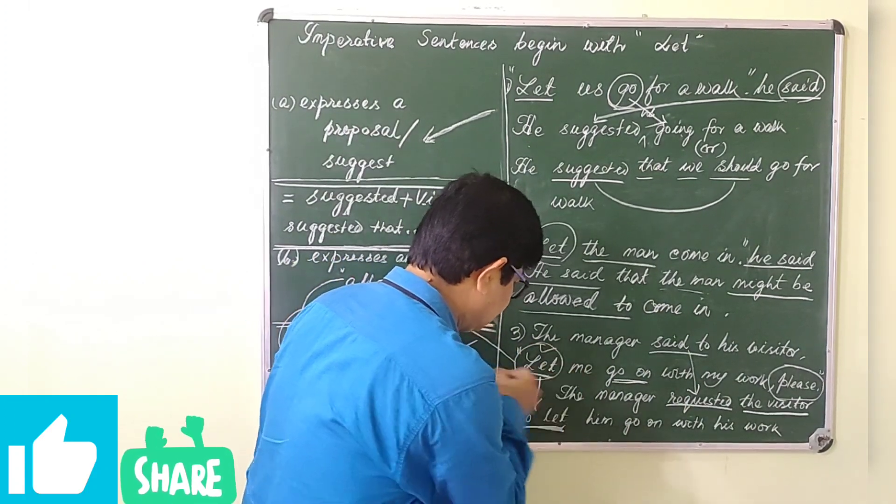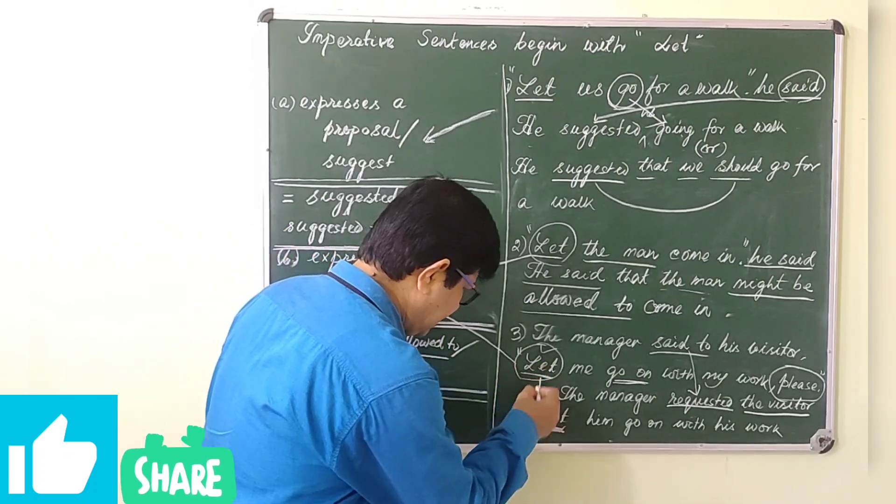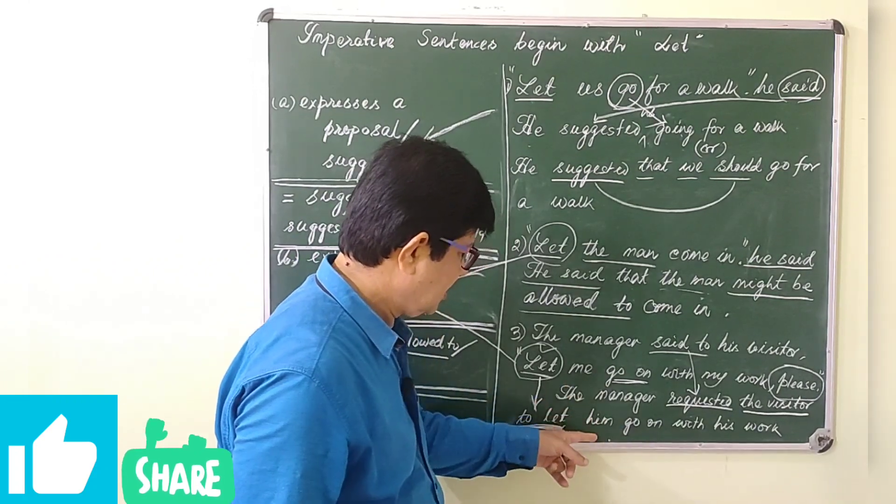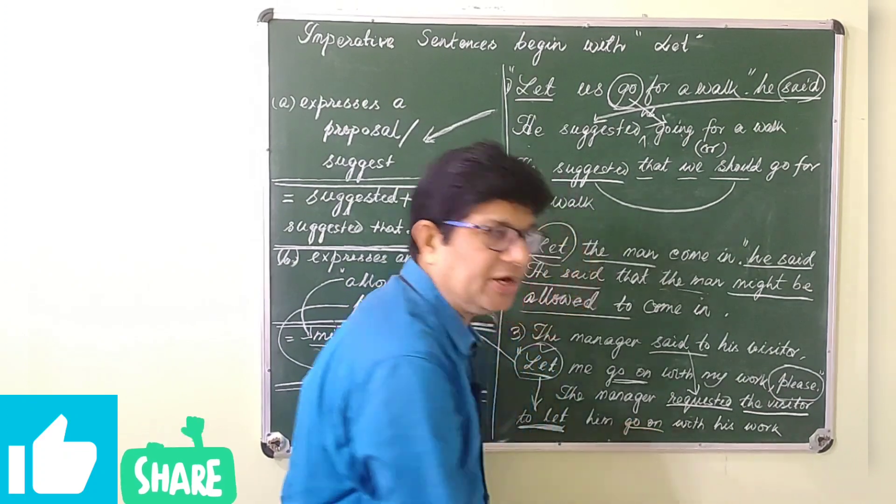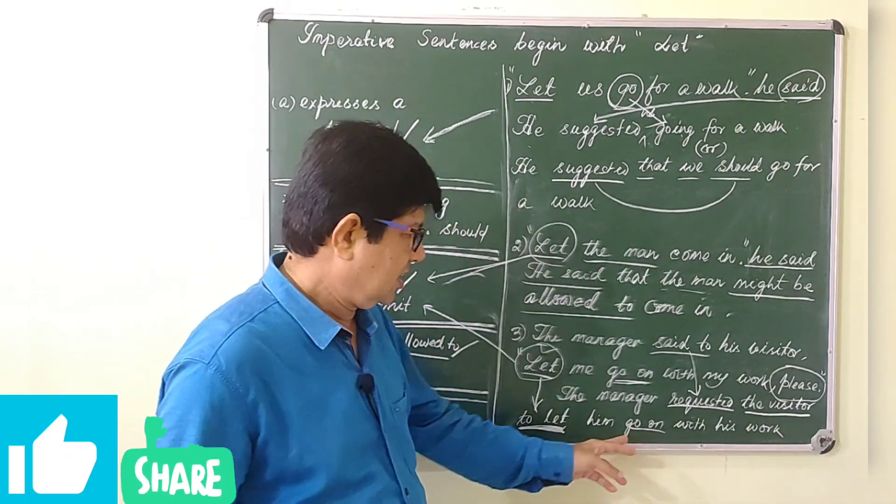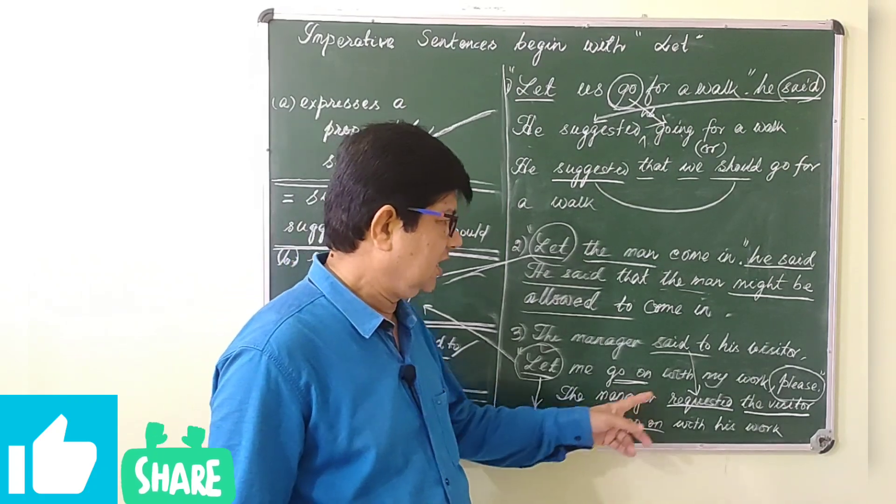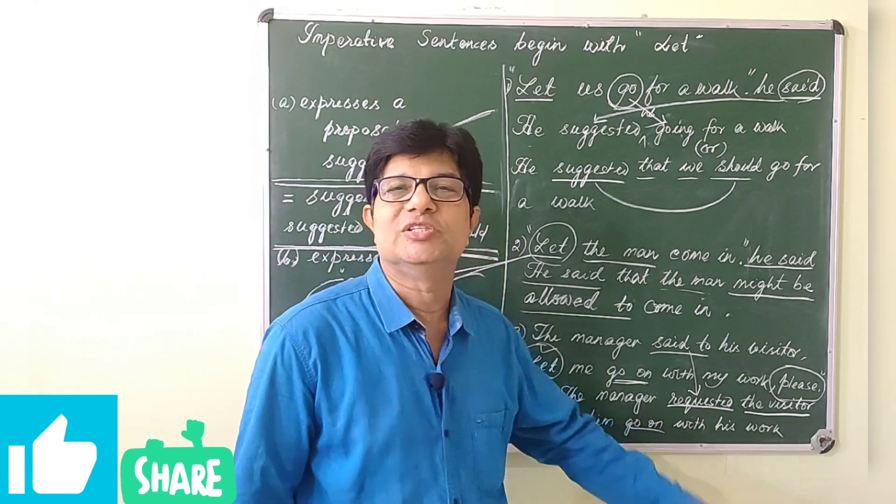This let is permission. This becomes infinitive: to let. To let him go. Me becomes him. Go on means continue. Continue with his work. The manager requested the visitor to let him go on with his work.